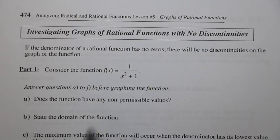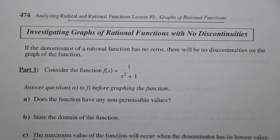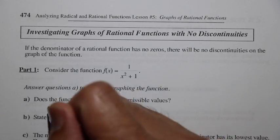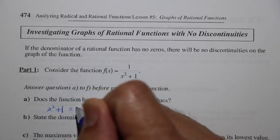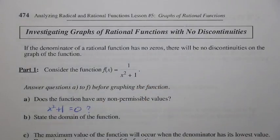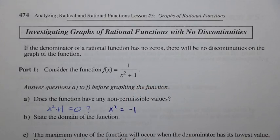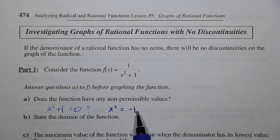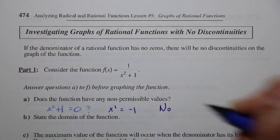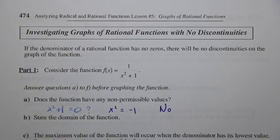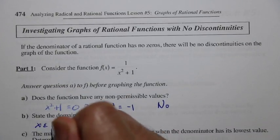Consider the function f(x) = 1/(x² + 1). Are there any non-permissible values? We check if x² + 1 can equal zero. Setting x² = -1, there's no real number whose square equals negative one. So there are no non-permissible values, meaning x can be any real number — no restrictions on the domain.